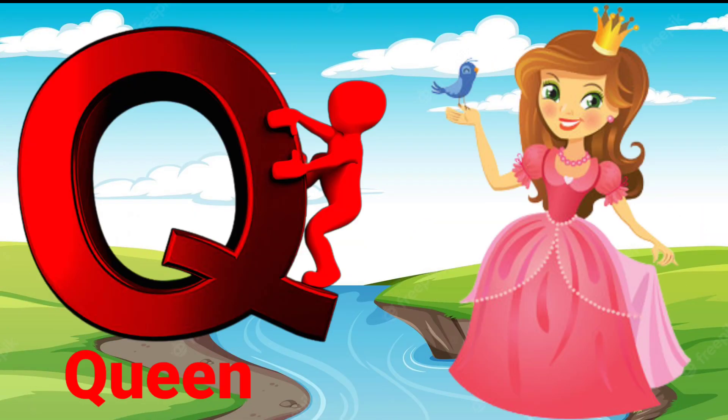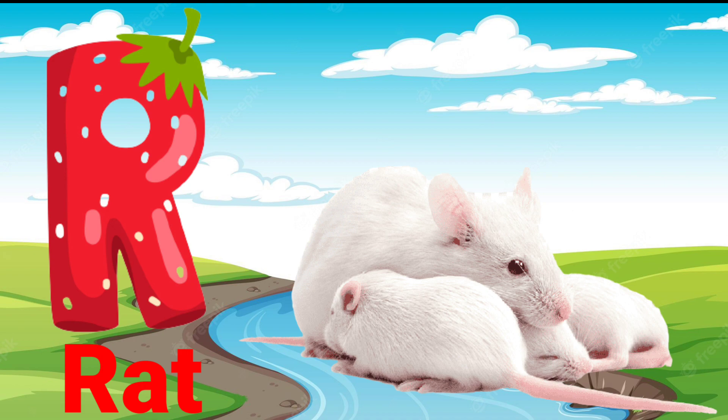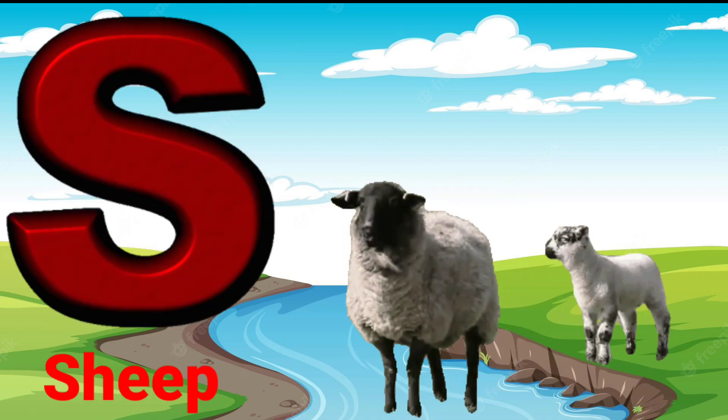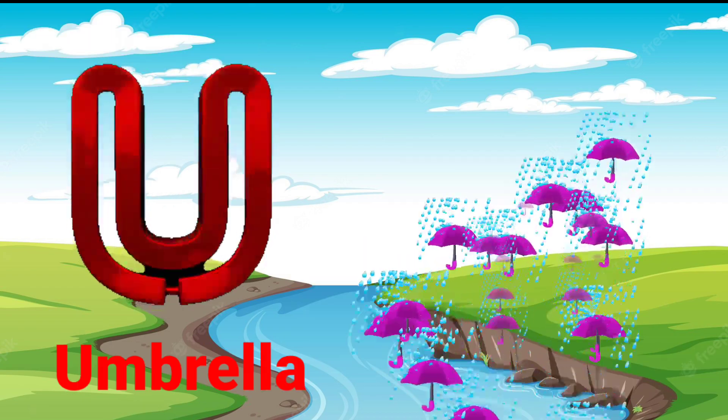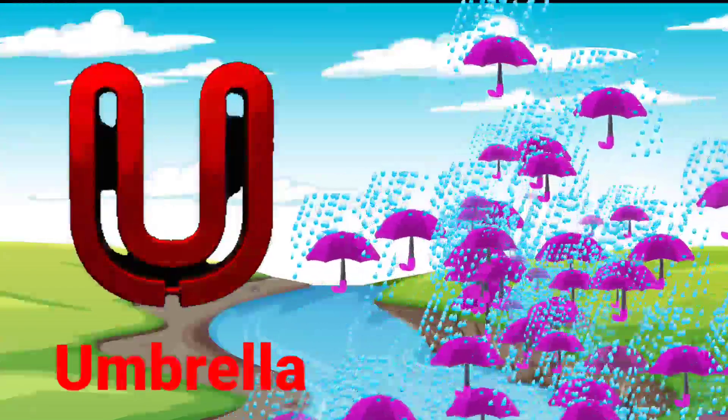Q for queen, R for rat, S for sheep, T for tiger, U for umbrella.